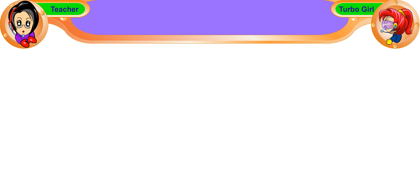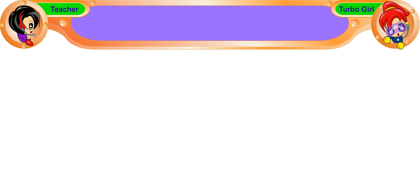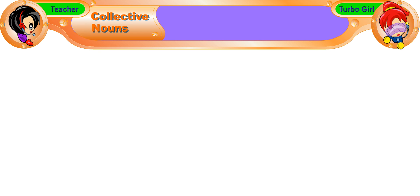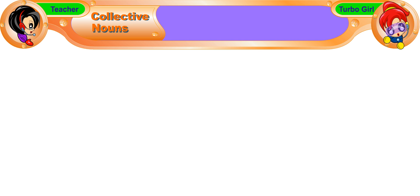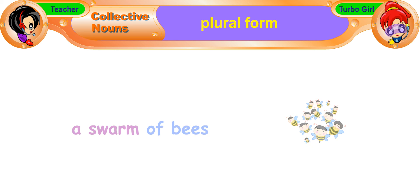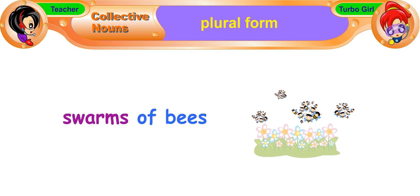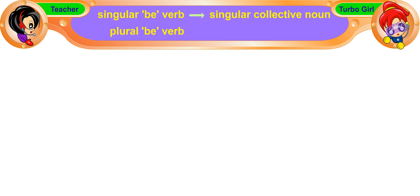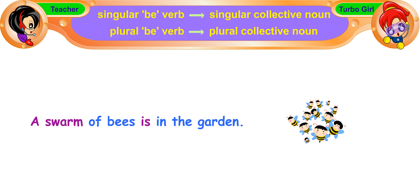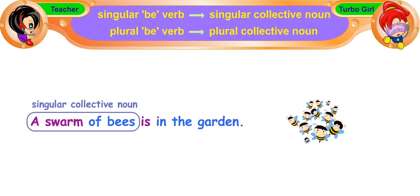Okay Turbo Girl, can you repeat all that I've taught you today? Okay. We learnt about collective nouns. Collective nouns are words that we use for groups of people, animals or things. Collective nouns can be in the singular form, such as a swarm of bees, or the plural form, such as swarms of bees. We use a singular be verb with a singular collective noun, and we use a plural be verb with a plural collective noun. For example, a swarm of bees is a singular collective noun, so we use 'is'.